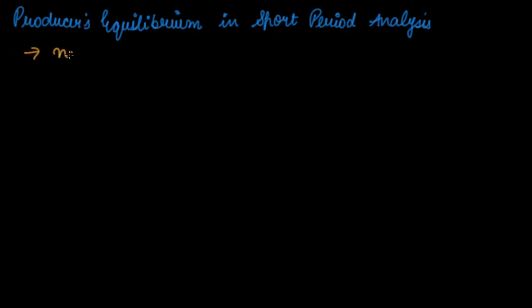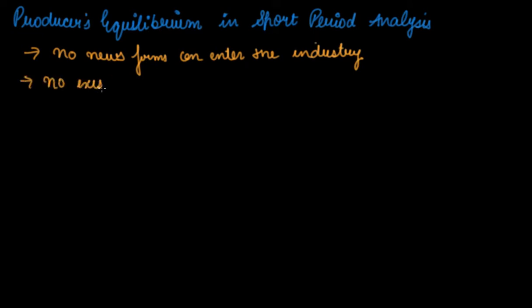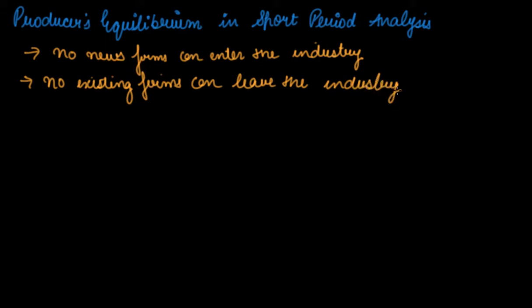In this video we will be studying the producer's equilibrium in short period analysis. In the short period, no new firms can enter the industry and no existing firms can leave the industry. It's just a very small period, so no new firms can enter or leave in the short run because in order to leave the industry you need a very long procedure.